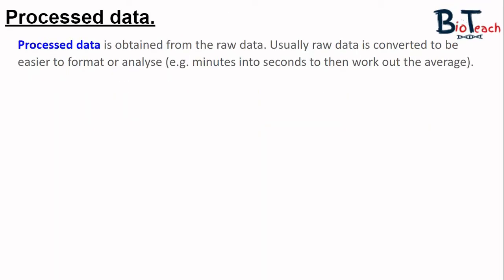And so this is where the processed data comes in. This is another definition that you need to know. Processed data is obtained from the raw data or calculated from the raw data table. Usually we have to convert the raw data into the same units of measure, so in our case we would need to go from minutes and seconds to just seconds. Working in just one unit or working in seconds makes it easier for us to calculate the mean and potentially to do other calculations or statistical analysis.